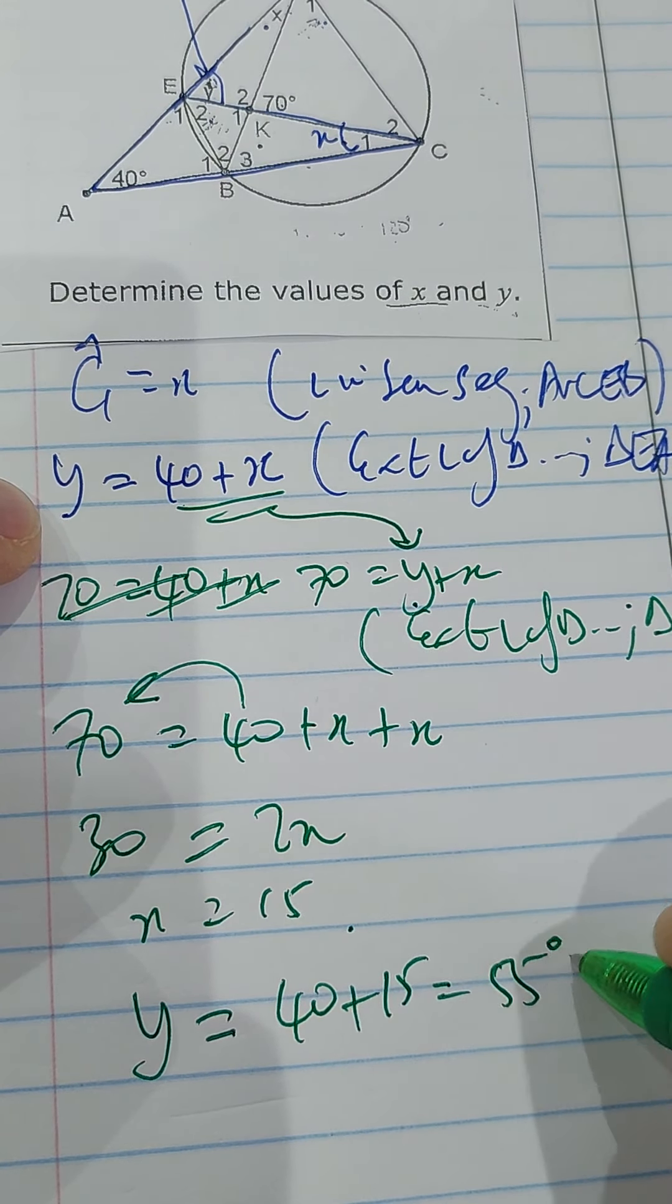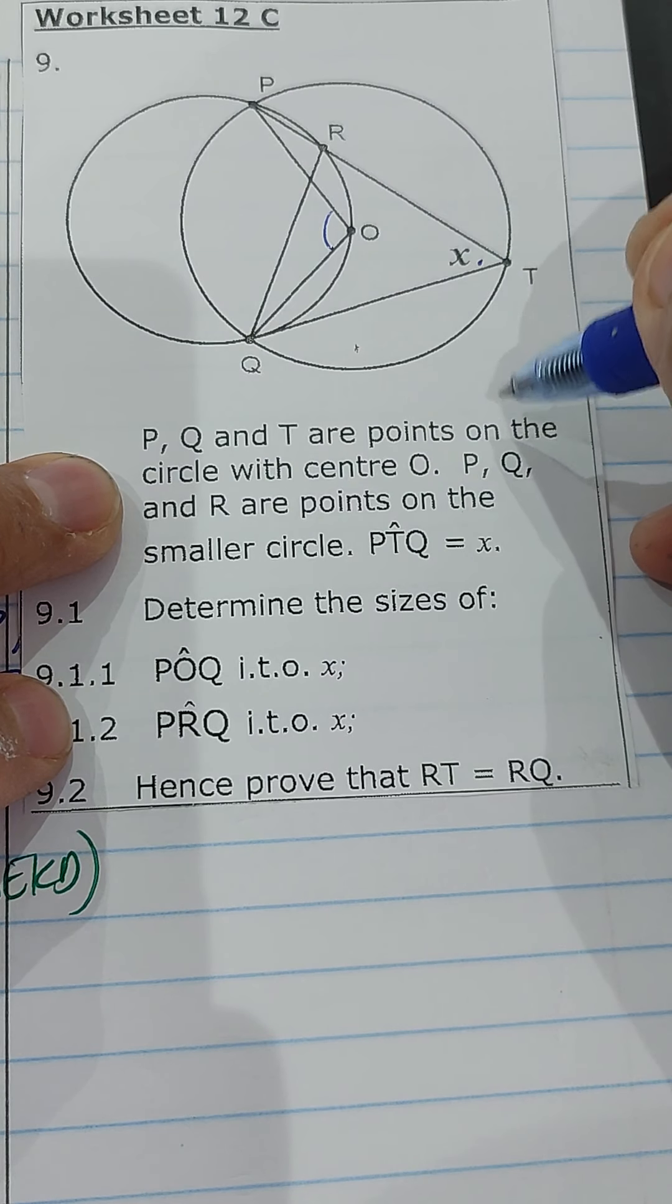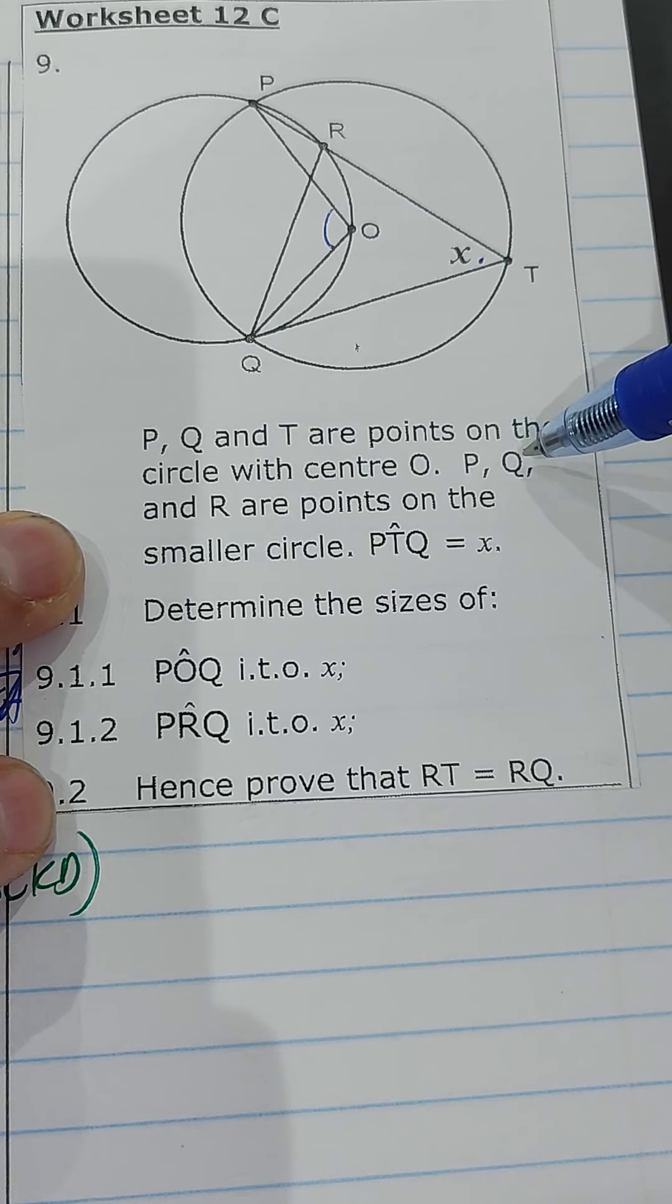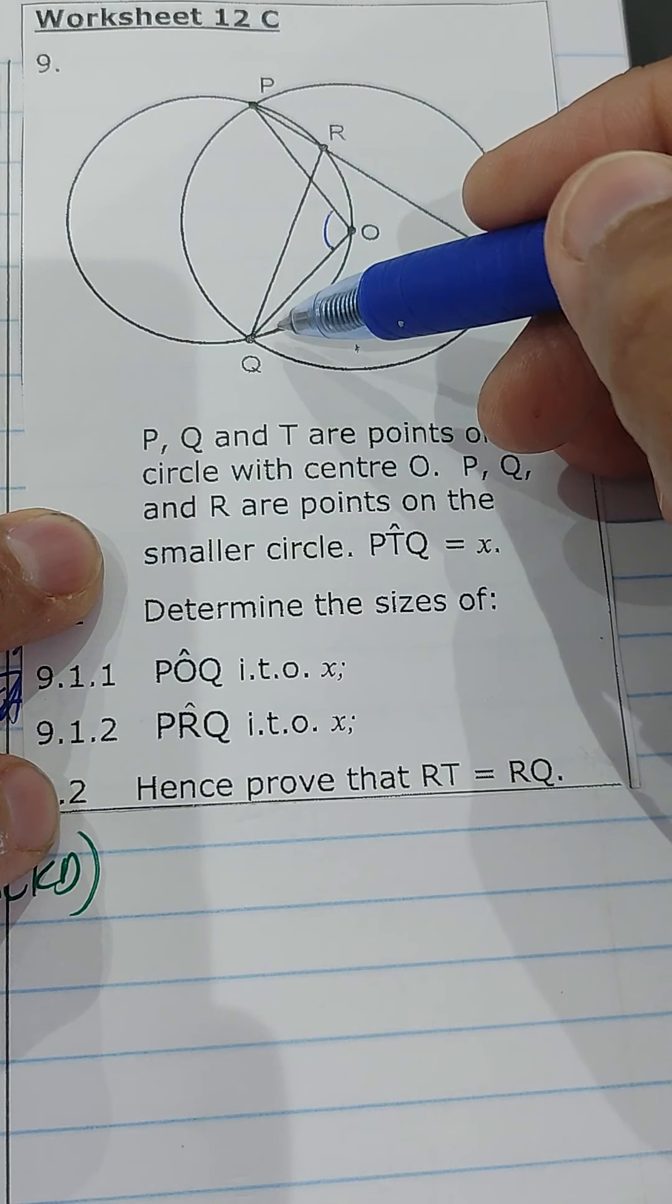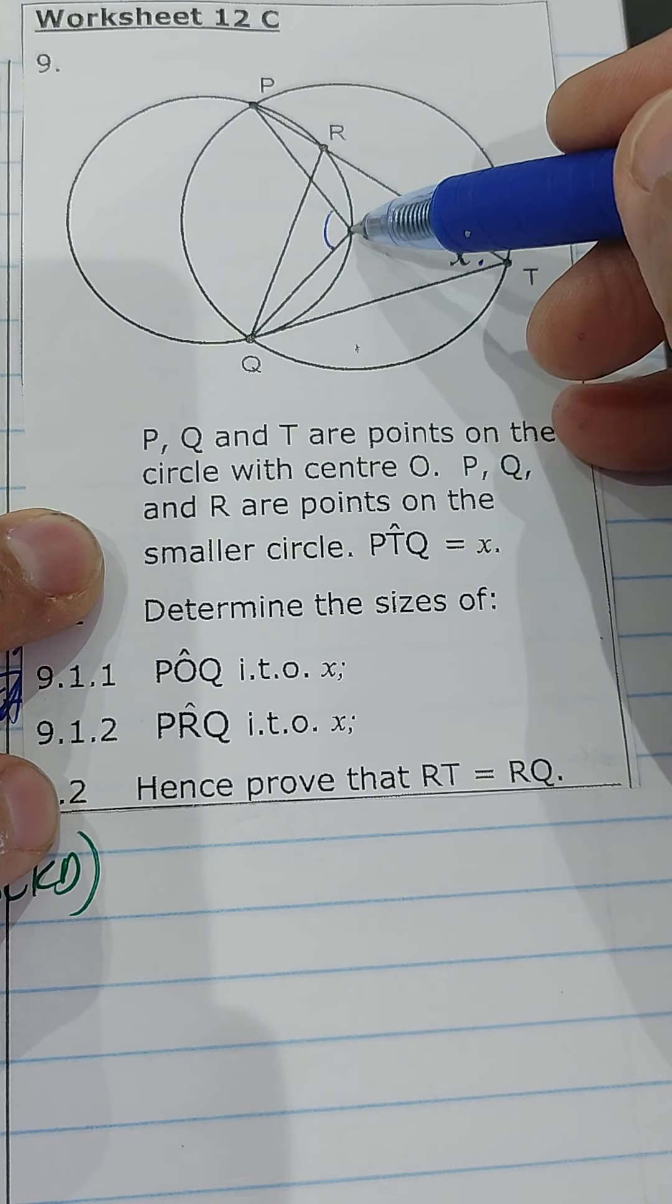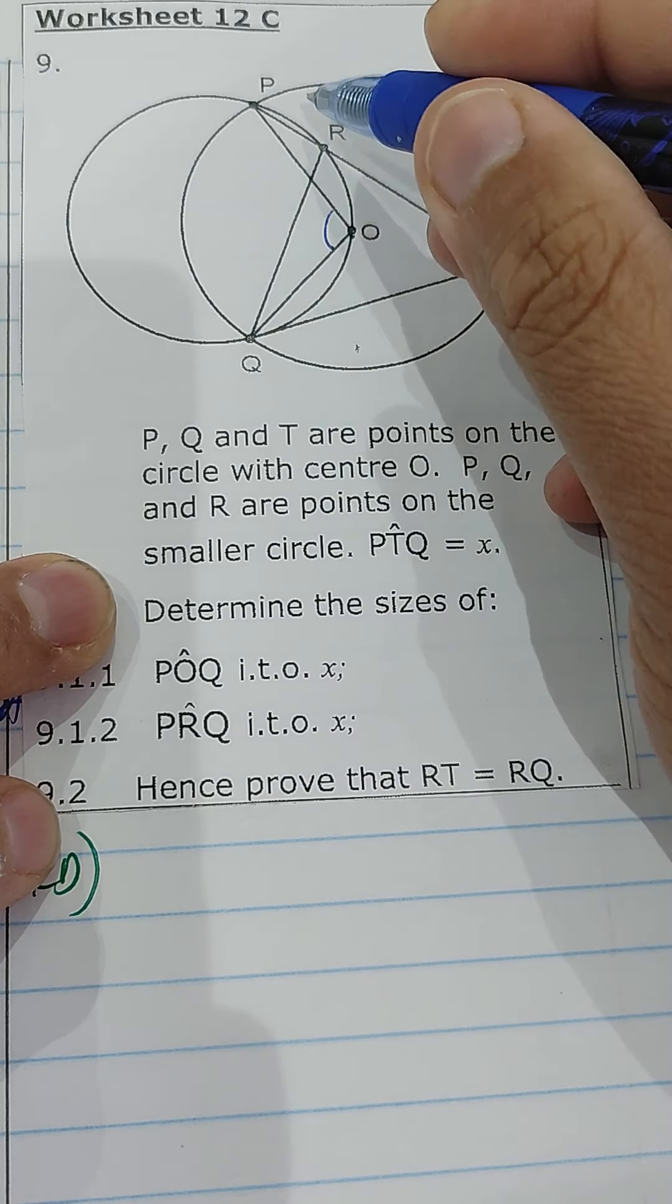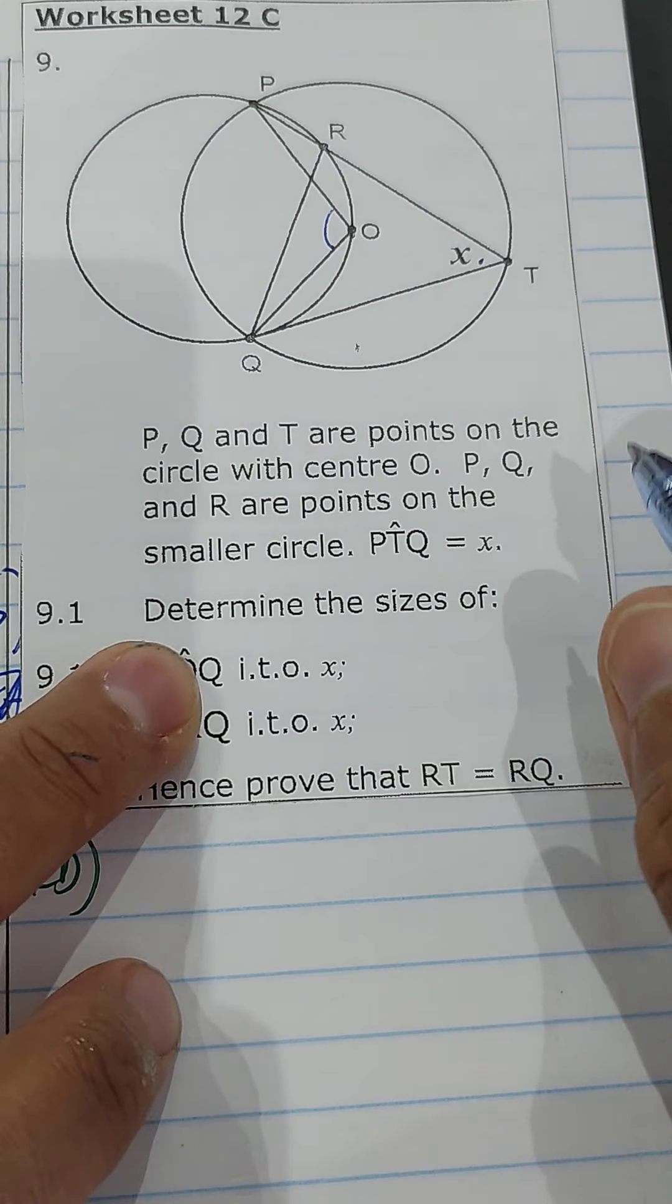Okay, now we're looking at number 9. In number 9, we are told that P, Q, and T are points on the circle with center O. We know that angle at center is twice angle at circumference, so that's going to be 2x. Then we are told that P, Q, and R are points on the smaller circle. P, R, and Q, let me read again. P, Q, and R are points on the smaller circle.